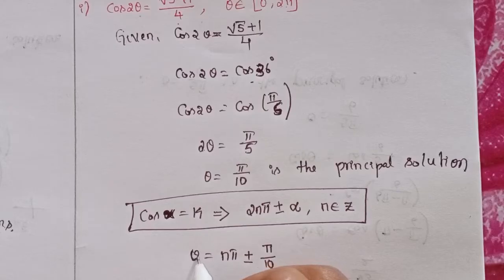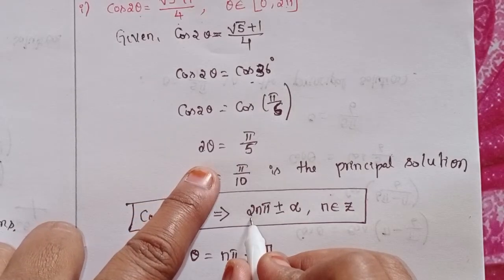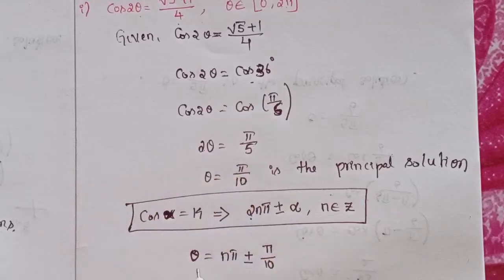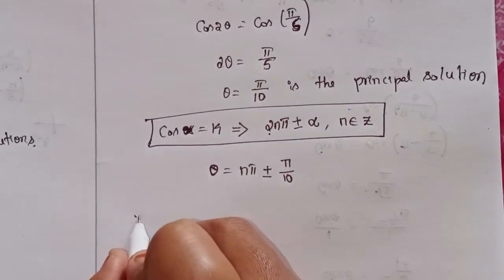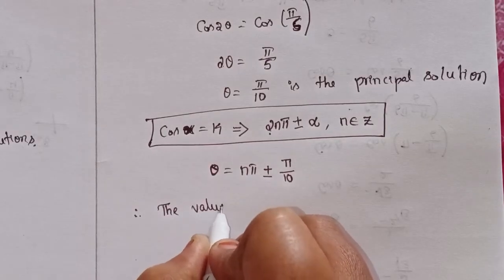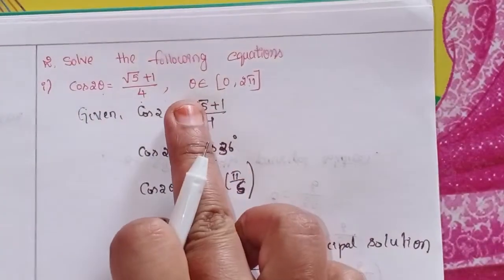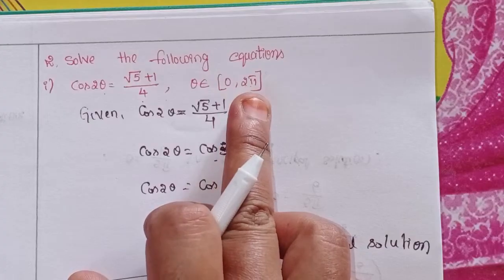Because of the factor of 2, we cancel it. So α = π/10, and I will write in direct form: θ = nπ ± π/10. Therefore, we find the values of θ given that θ belongs to 0 to 2π.